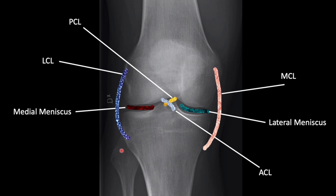On this radiograph you can see the important ligaments. There are two important ligaments sitting in the middle and crossing each other - the cruciate ligaments: the anterior cruciate ligament (ACL) and posterior cruciate ligament (PCL). On the sides you have the collateral ligaments: the medial collateral ligament (MCL) and the lateral collateral ligament (LCL). In between the femur and the tibia, you have two menisci that work like cushions - the medial meniscus and the lateral meniscus.